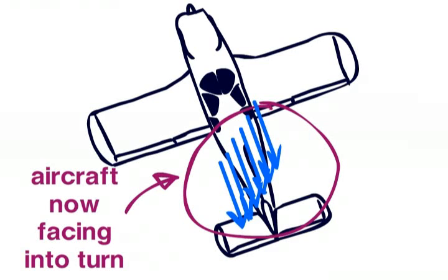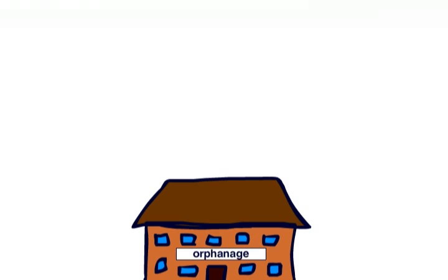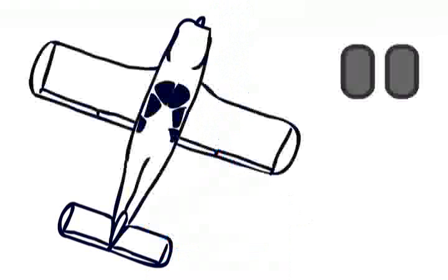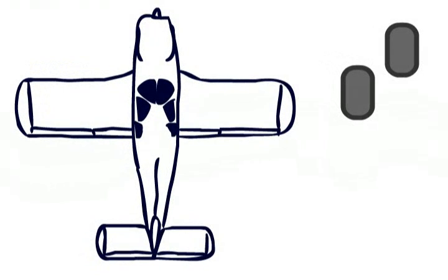Left unchecked, the aircraft will go into a spiral descent, which isn't too good for anybody involved. However, the introduction of a little rudder into proceedings sorts all this out.